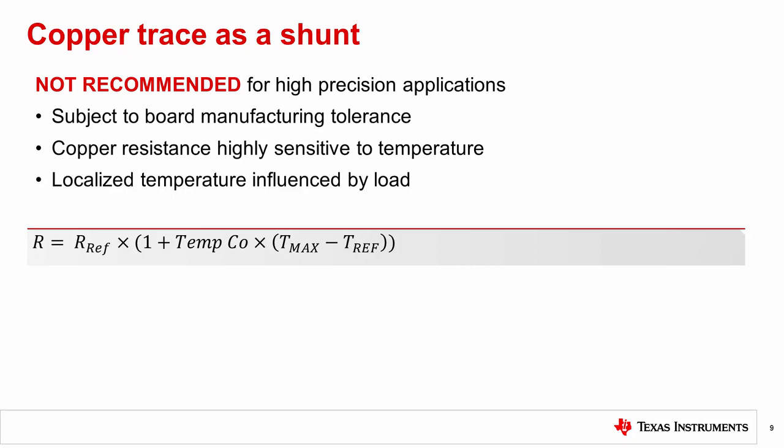One shunt implementation that may be tempting to try is a copper board trace. For applications in which precision is paramount, we highly recommend against this approach. The primary reasons are as follows. The board manufacturer does not have perfect manufacturing capabilities, and therefore, the sample of bores produced might have much looser tolerances than what can be accepted. Second, copper is highly sensitive to temperature. Consequently, as the ambient temperature changes for our system, the trace shunt may see large changes in resistance. Related to this is the third reason. The very current you pass through the trace will produce heat in either the trace or in adjacent components, which then leads to changes in your resistance.